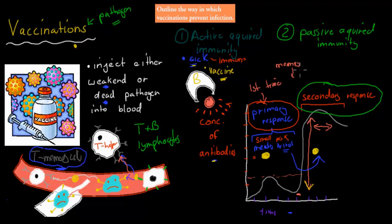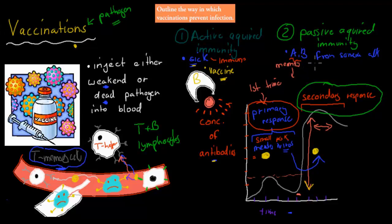Passively acquired immunity is different. All we do is take antibodies from someone else and inject them into our body. For example, if you're going to a place that might have a disease you want protection from, you might be injected with antibodies against that disease, giving you immunity for maybe two weeks or so. Once those antibodies are destroyed over time, you're no longer immune. Actively acquired immunity involves being exposed to a pathogen and producing memory cells that keep you from getting sick.